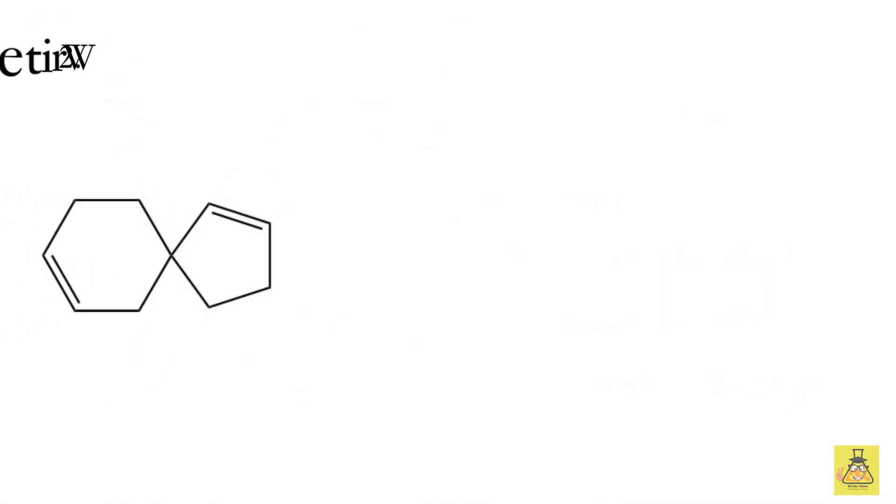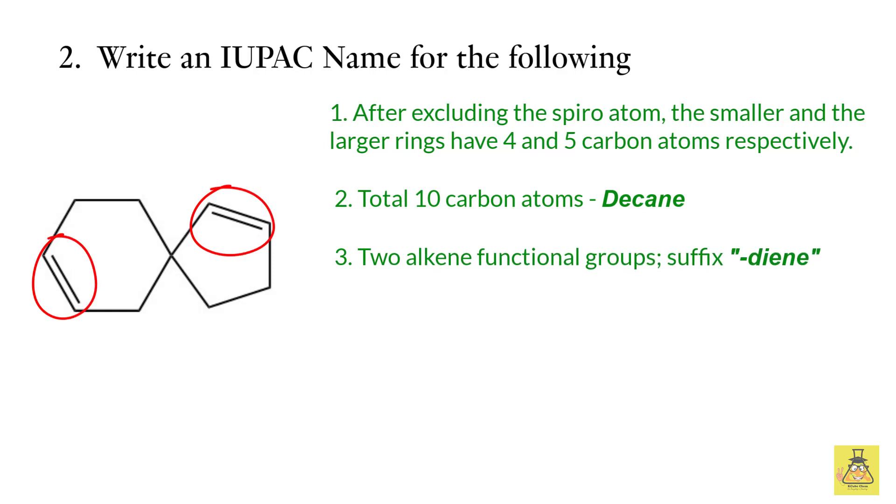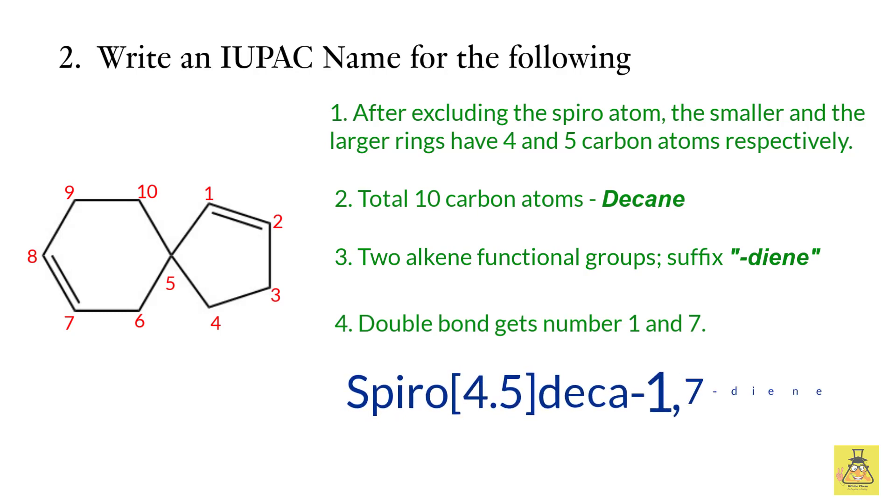Let's look at another example. In this molecule we see two rings having four and five carbon atoms after we exclude the spiro atom, of course. The total number of carbon atoms are 10, which makes it a decane. We have two alkene functional groups, hence we use the suffix diene. We start numbering from the four-membered ring and then go to the five-membered ring, keeping in mind that the double bond should get the lowest possible number. Hence they get number one and seven. Hence our name becomes spiro[4.5]deca-1,7-diene. Again in this case, we use di to indicate two alkene groups, hence we retain the letter a.